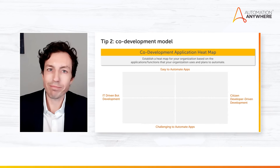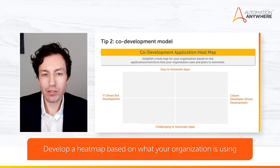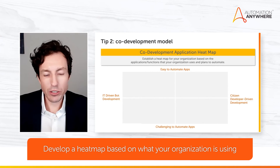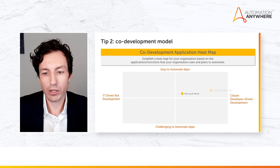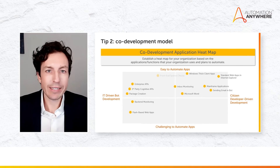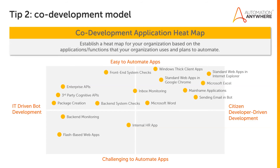This is part 2B of our co-development model: develop a heat map based on the applications your organization is using, driven by the opportunities you're looking at for automation. On one side we've got IT-driven bot development; on the other side, citizen developer-driven development. On the top we've got easy-to-automate apps, and on the bottom, challenging apps. I'd map out all of these applications — this is a living and breathing document we continue to update as we build more comfort with certain applications.